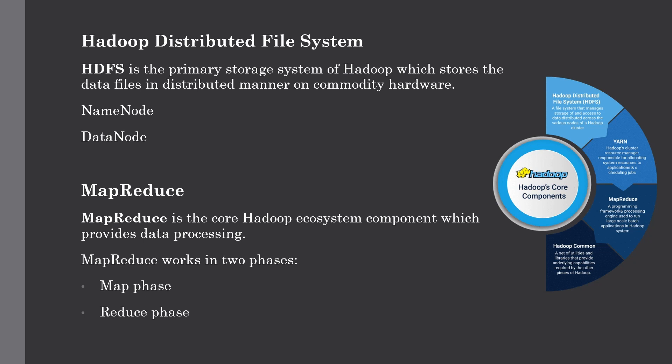HDFS basically has two components. The first one is a NameNode and the second one is a DataNode. The NameNode is also known as a master node which does not actually store the data; instead it stores the metadata — information about the number of blocks, their locations, rack information, and other details related to the DataNode. The next component is the DataNode, also known as a slave node, which is responsible for actually storing your data files.